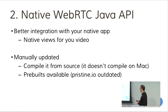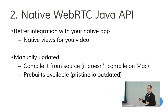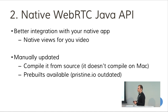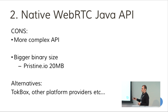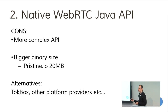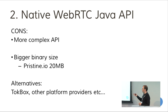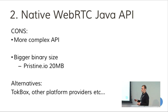For Android, WebRTC doesn't compile on Mac or Windows, so you need a dedicated Ubuntu box to compile it, which is not easy to maintain. The native Java API is also more complex than JavaScript, partly due to the language and partly due to Android-specific things. The binary size is also bigger — for example, when you create something with Pristine.io, you get about 20 megabytes of APK size.